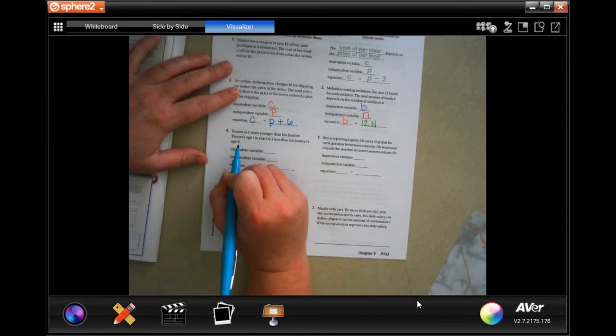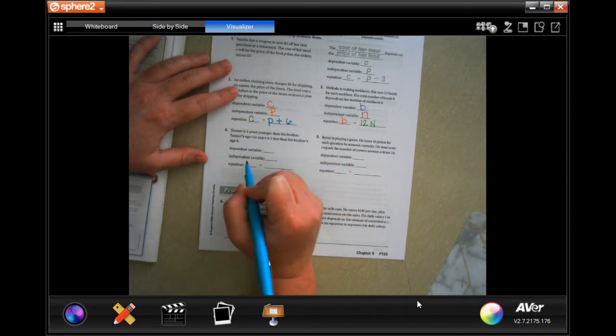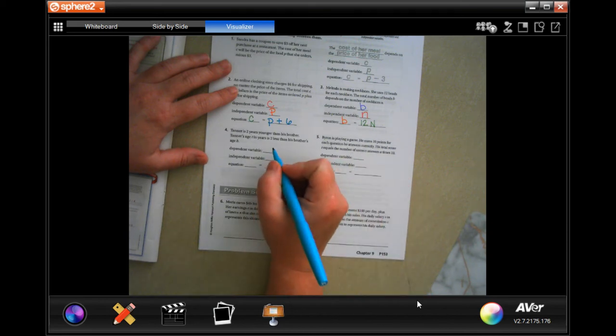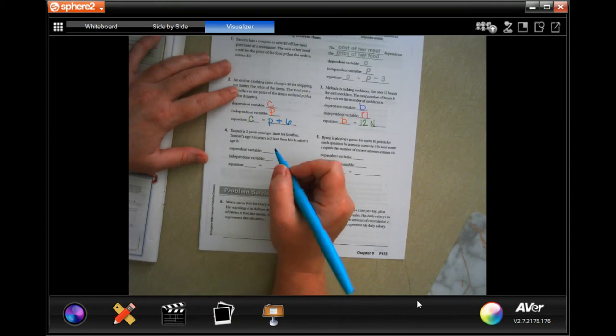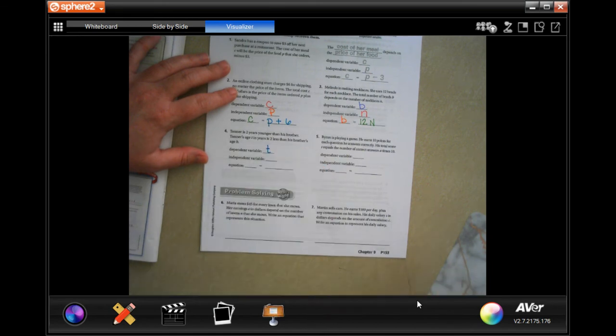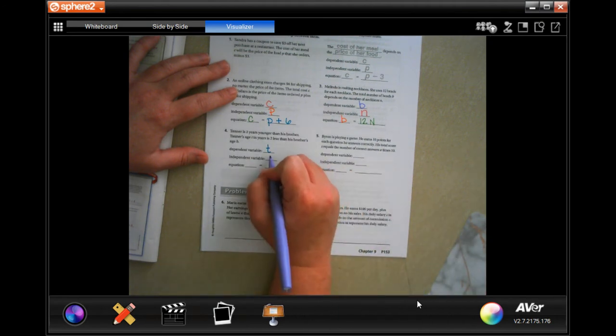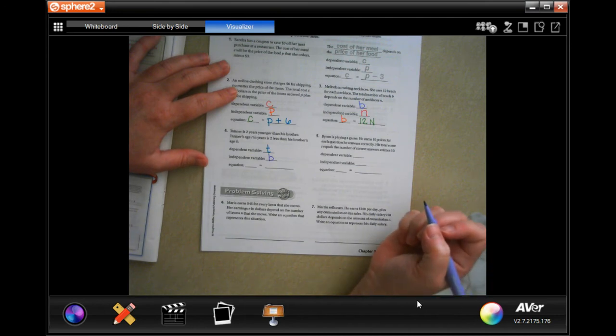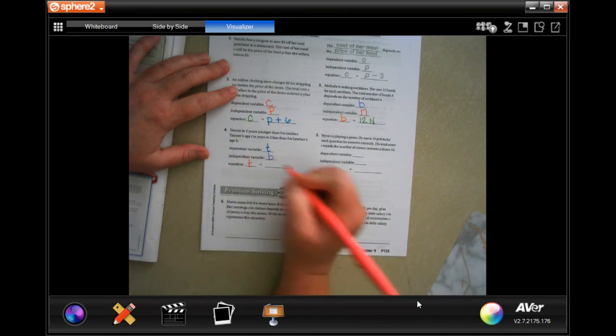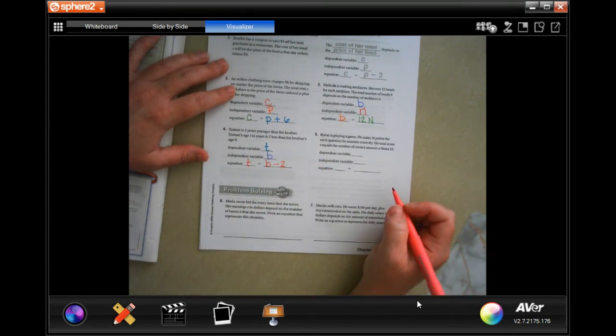Tanner is two years younger than his brother. Tanner's age, T, in years, is two less than his brother's age, V. Well, Tanner's age is dependent on how old his brother is in this situation. Finding out what Tanner's age is, it's dependent on his brother's age. So that means that T goes there. The independent variable is going to be his brother's age. So now your equation is going to be Tanner's age, it's his brother's age minus those two years.